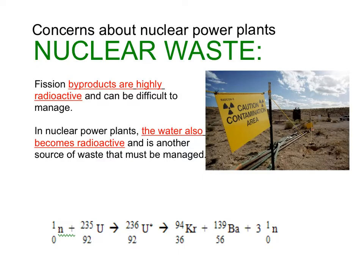Some of the biggest concerns about nuclear power: fission creates very highly radioactive byproducts. We get a lot of energy out of it, but we also get a lot of radioactive waste. All of the water — the red water, and in some cases even the blue water — also becomes radioactive and is another source of radioactive waste. So you have a trade-off: there's no air pollution, but there is a very highly radioactive byproduct that we have to deal with.